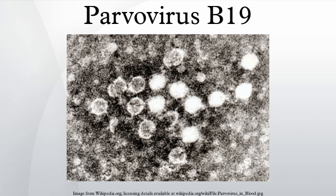Aplastic crisis: although most patients have a decrease of erythropoiesis during parvovirus infection, it is most dangerous in patients with pre-existing bone marrow stress, for example sickle cell anemia or hereditary spherocytosis, and who are therefore heavily dependent on erythropoiesis due to the reduced lifespan of red cells. This is termed aplastic crisis. It is treated with blood transfusion.